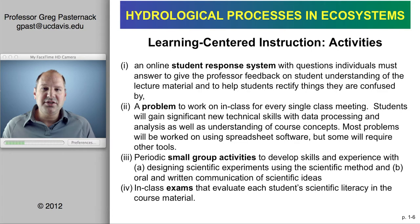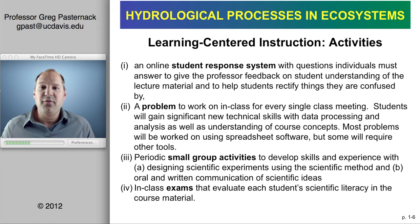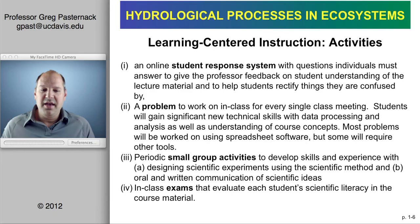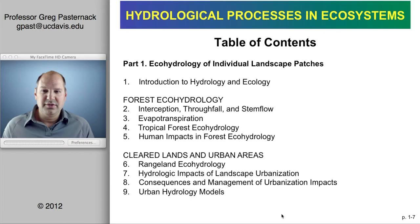Next, there will be periodic small group activities designed to help you digest blocks of information. After covering a topic like hydrology and forests, I'm going to ask you to work in groups of perhaps four to design scientific experiments using the scientific method to solve a related problem, then make an oral presentation and communicate your ideas in a small written proposal. Developing oral and written communication skills in a group context is essential to practicing as a professional environmental scientist. Finally, all classes at UC Davis are required to have examinations, and this class has three, which will evaluate each student's progress in gaining scientific literacy in the course materials.